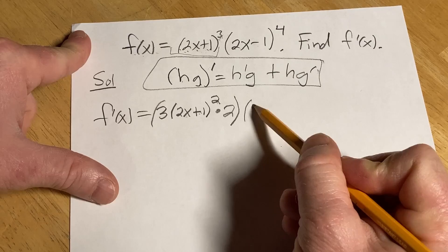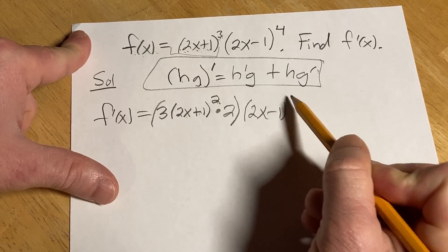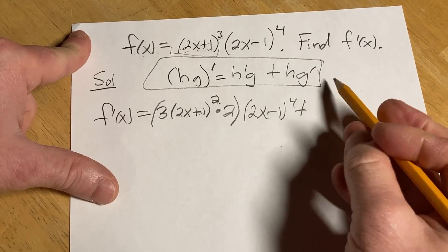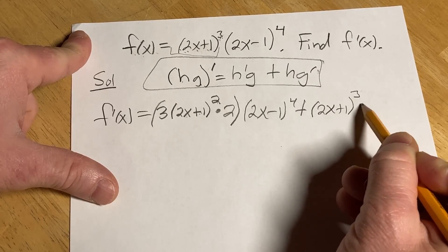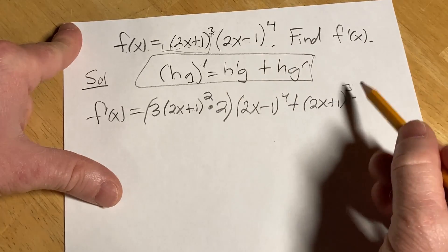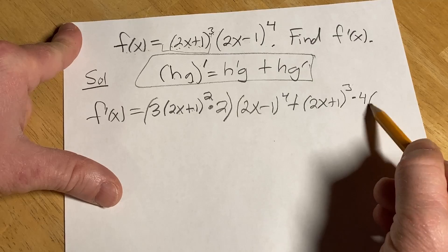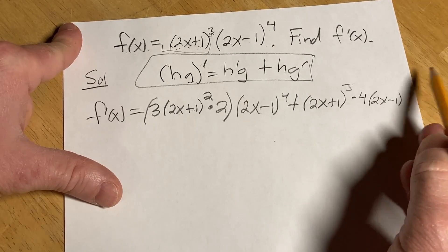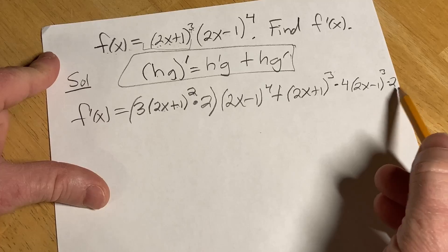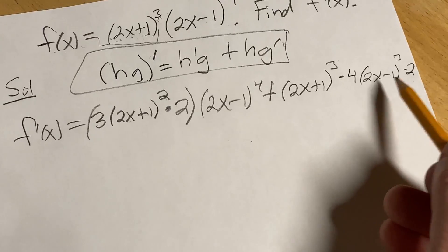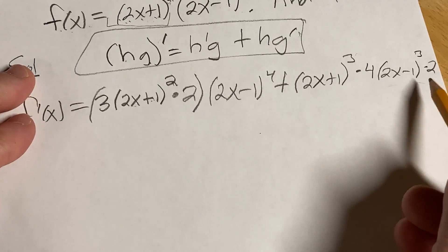Times the second, 2x minus 1 to the fourth, plus the first. We're not differentiating, we're just writing them down. Times the derivative of the second. So 4, bring down that 4, 2x minus 1, subtract 1 from the exponent, and then times 2. That little 2 comes from the chain rule. Really easy to forget about that little 2 there. So don't forget about the 2.